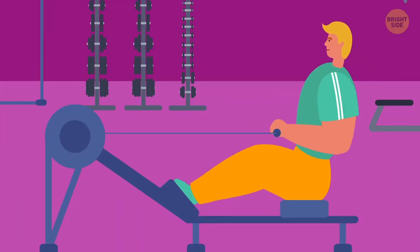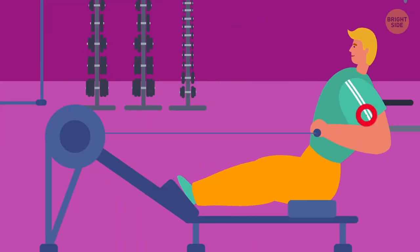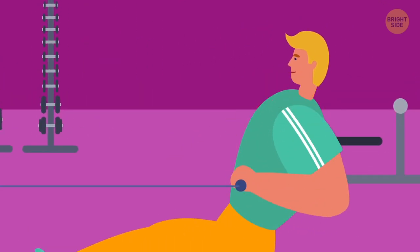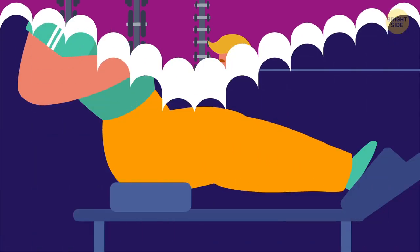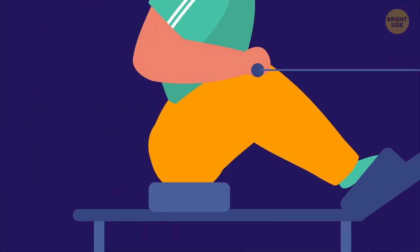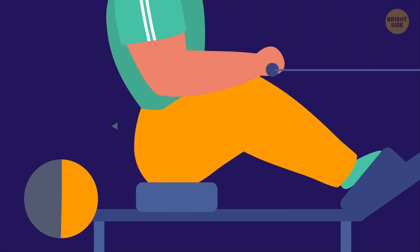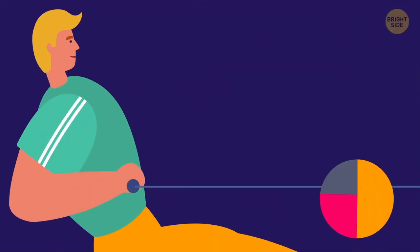If you do some rowing, avoid putting all the pressure on your arms. It'll result in too much stress put on your upper body, which is likely to cause shoulder and back injuries. Keep in mind that more than half of your power is supposed to come from pushing against the foot panel with your legs. The rest should be divided between your arms and core.